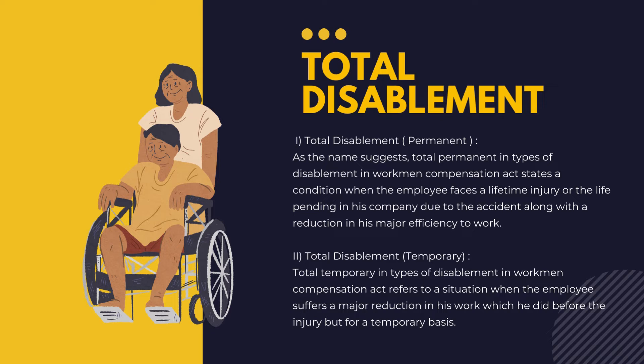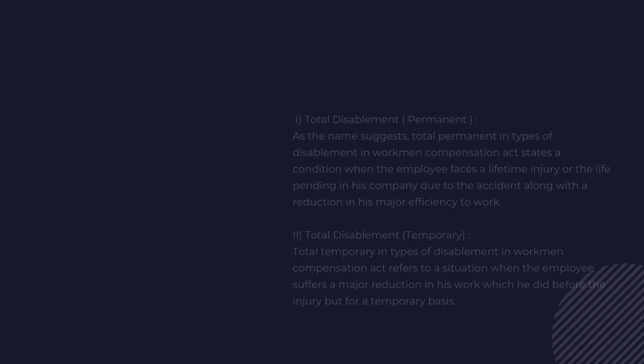The second type is temporary total disablement, which refers to a situation where the employee suffers a major reduction in his capacity to work compared to before the injury, but only on a temporary basis. For example, if Mr. X is working in a marketing department and meets an accident resulting in a fracture in his legs, he cannot continue his field work but only for a temporary basis. The key difference is that in permanent total disablement the person cannot work for the rest of his life, whereas in temporary total disablement the person can resume work after recovery.